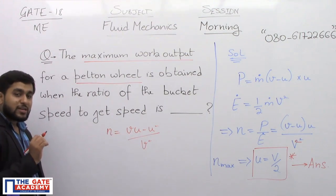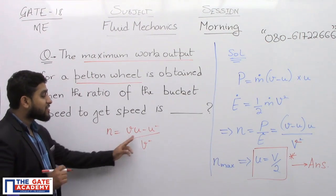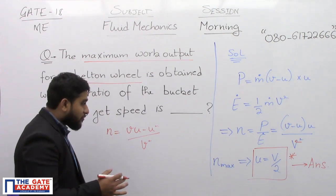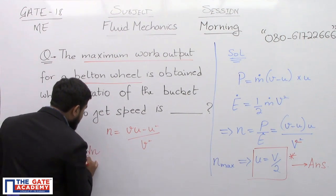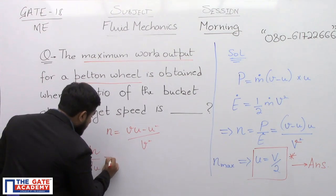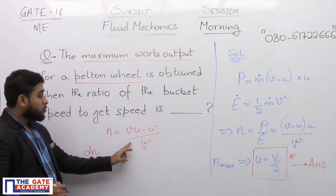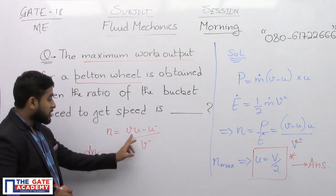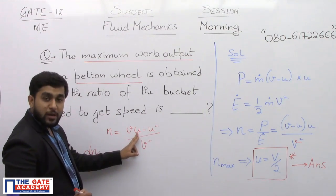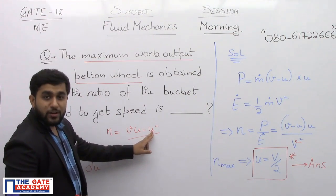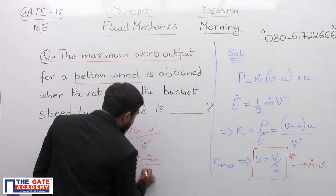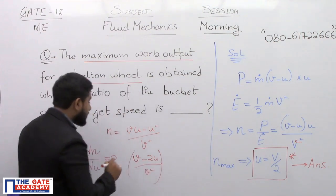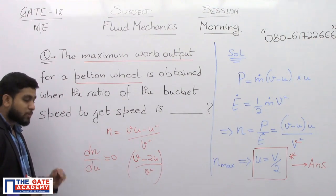If v is a known quantity, then eta is a function of u. Then, in order to find out eta maximum, what we can say is that d eta by du should be equal to 0. When you take a differential of this, the differential will become v u will become u, minus u square, it will become 2u. So we will have (v minus 2u) by v square. This will be the differential of eta with respect to u.